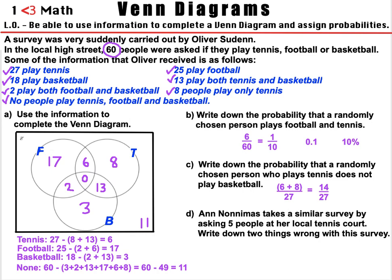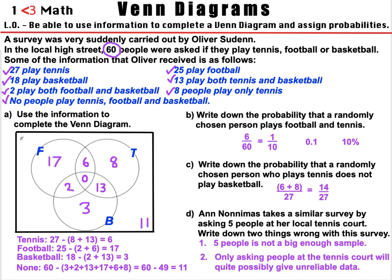Part D: Ann Anonymous takes a similar survey, asking 5 people at her local tennis court. Write down two things wrong with this survey. First, 5 is not a big enough sample — usually a good sample would be 50 or more. Second, asking people at the tennis court could give unreliable data, because the people there will usually be playing tennis. It's better to ask people randomly, like Oliver Sudden did in the local high street, taking a bigger sample of 50, 60, or 100 people — the bigger the sample, the more accurate the data.